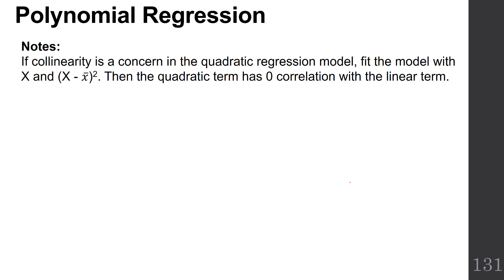Keep in mind, if collinearity is a concern since X and X² are completely related to each other, fit the model with X as your first predictor and instead of just X², do (X - X̄)². It turns out that if you do this, the quadratic term has zero correlation with the linear term. So you'll get rid of your problem of collinearity.